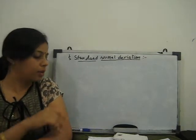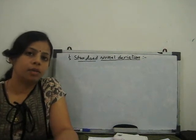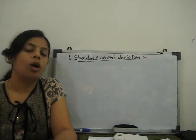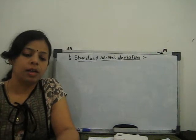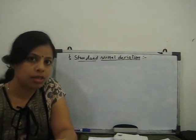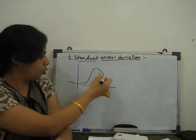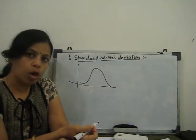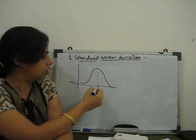Welcome to our new video where we discuss the standard normal distribution. In my previous video you already learned about normal distribution — what it is and how we can solve problems using it. Normal distribution is a bell-shaped distribution. We also discussed the 68, 95, 99.7 rule and the fact that it is symmetrical about its mean line.